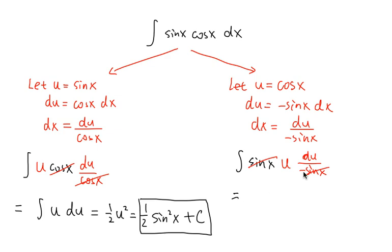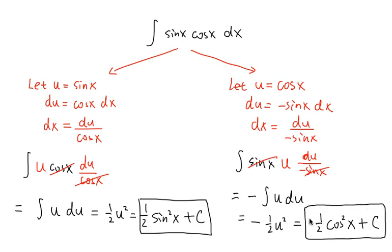And then we can proceed. This will be negative integral u du. And this will be just negative 1 half u square. And finally, I can plug in cosine x into the u right here. So this is going to be negative 1 half cosine square x plus c. And as you can see, this will also work out nicely.